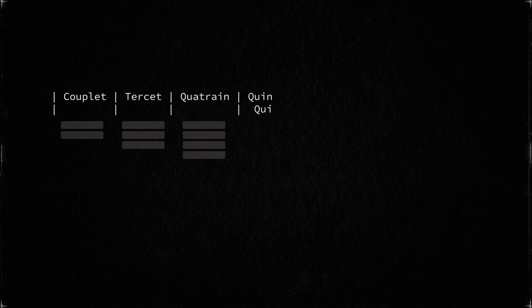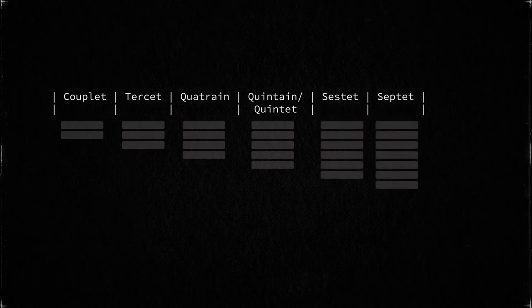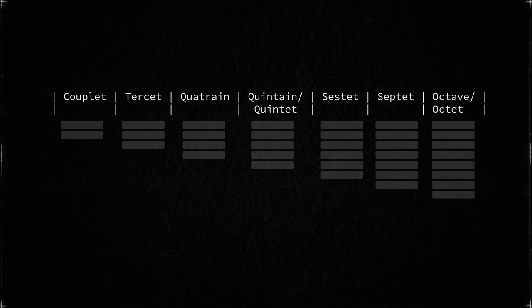So we've gone over the definition of a line and some guidance on how to creatively break lines. Say you want to put a couple of those lines together — that's called a stanza. It can also be called a verse, like in music. After the line, the stanza is the next major unit in a poem — if there's blank space before it and after it, that's a stanza. There are different names for stanzas with different numbers of lines: two lines is a couplet, three is a tercet, four is a quatrain, five is a quintain or quintet, six is a sestet, seven is a septet, and eight is an octave or octet. There are more terms for longer stanzas, but these are the most commonly used.